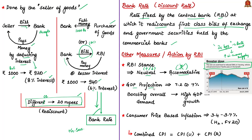The Reserve Bank of India has revised the GDP growth projection for the current financial year from 7.2% to 7%. In April's Monetary Policy Committee meeting, the revised GDP projection was 7.2%, but now it has been downgraded to 7%. If there is a possibility to boost overall demand in the economy, particularly private investment activity, we can achieve higher GDP growth, while also consistently targeting inflation.